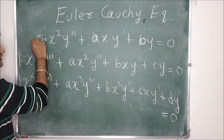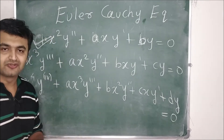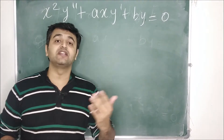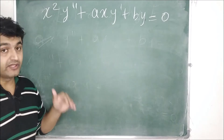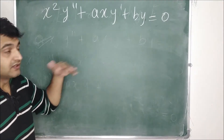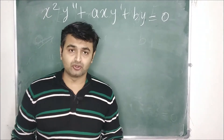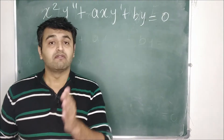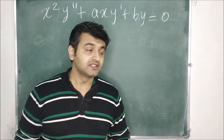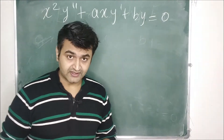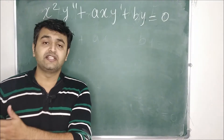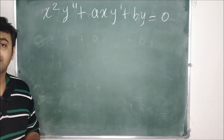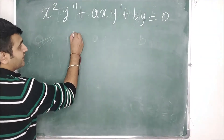Let's concentrate on the second order case. Since the coefficients are not constants, we cannot use our previous method y = e^(λx) — that approach won't work here. For second order, the general solution is c₁y₁ + c₂y₂ where y₁ and y₂ are linearly independent solutions, just as we found for second order linear homogeneous ODEs with constant coefficients.